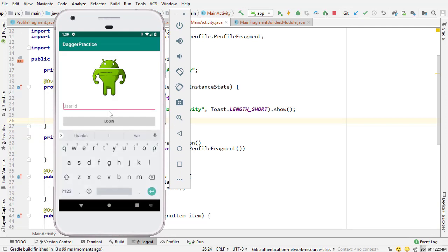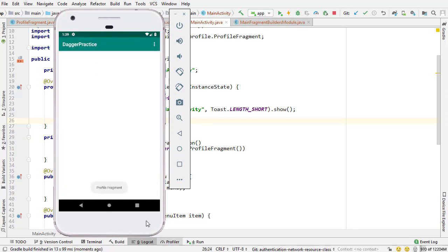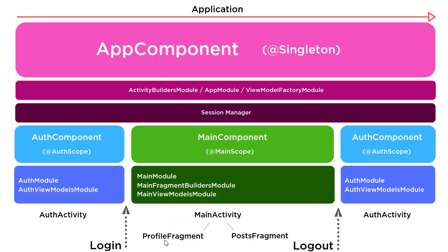There's the app on screen. I'm typing in a user ID, logging in, and there is profile fragment coming into view - everything's working as expected. In the next video I'm going to start setting up the view model for profile fragment. Profile fragment and post fragment will each have an individual view model, and post fragment will make a different call to the API so you can see a couple different variations of the same thing.